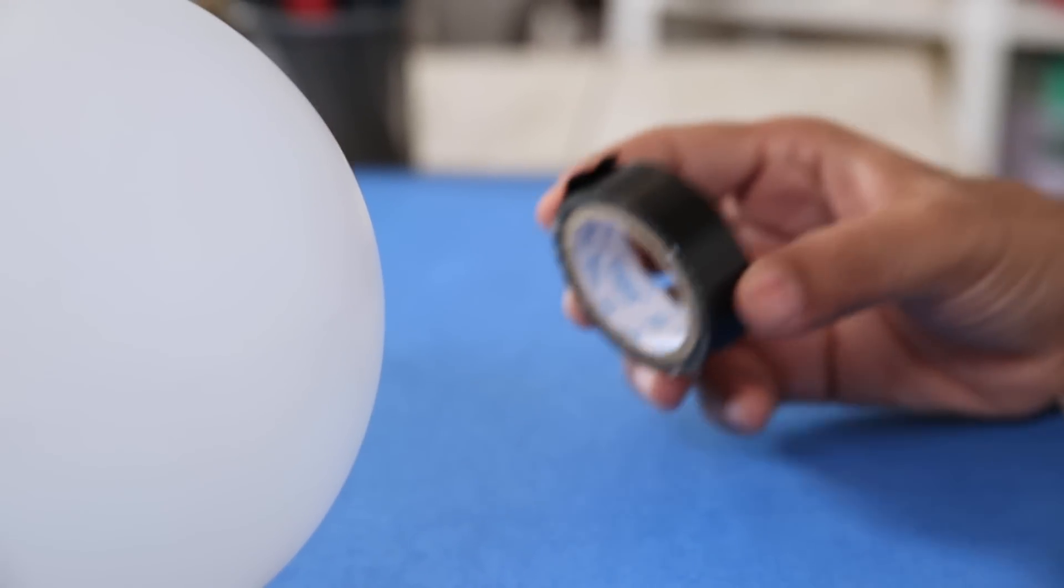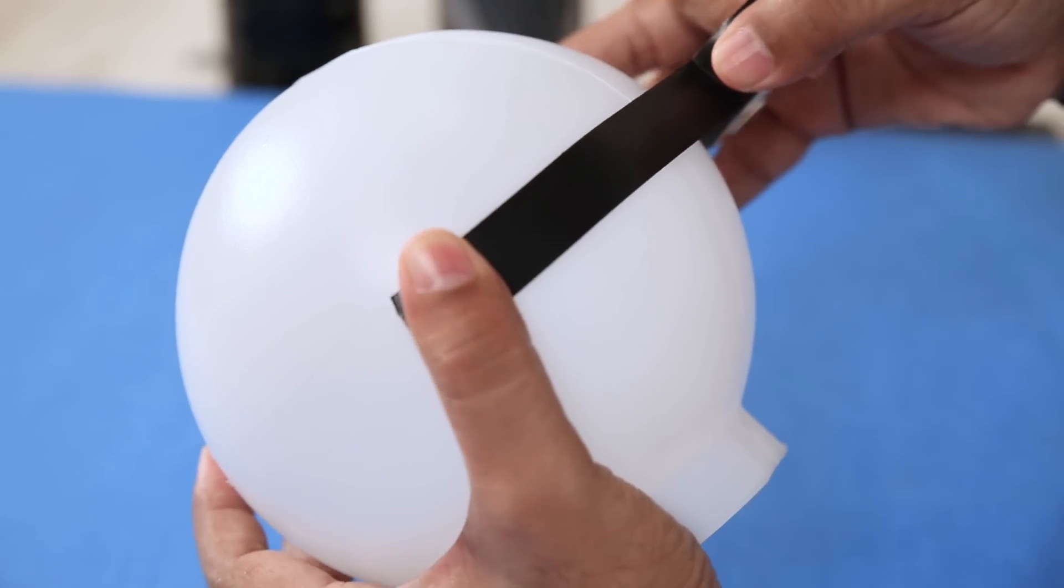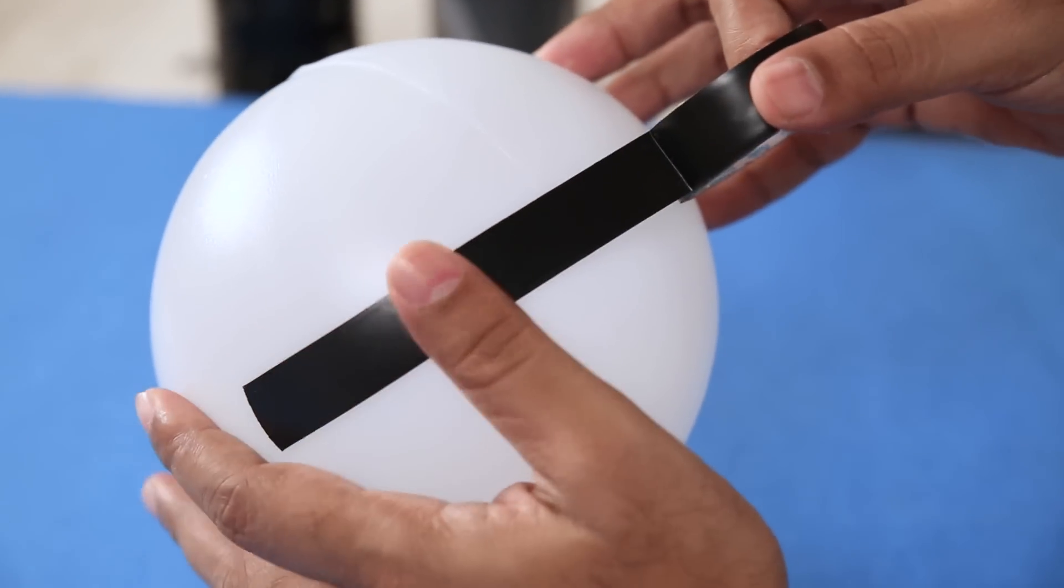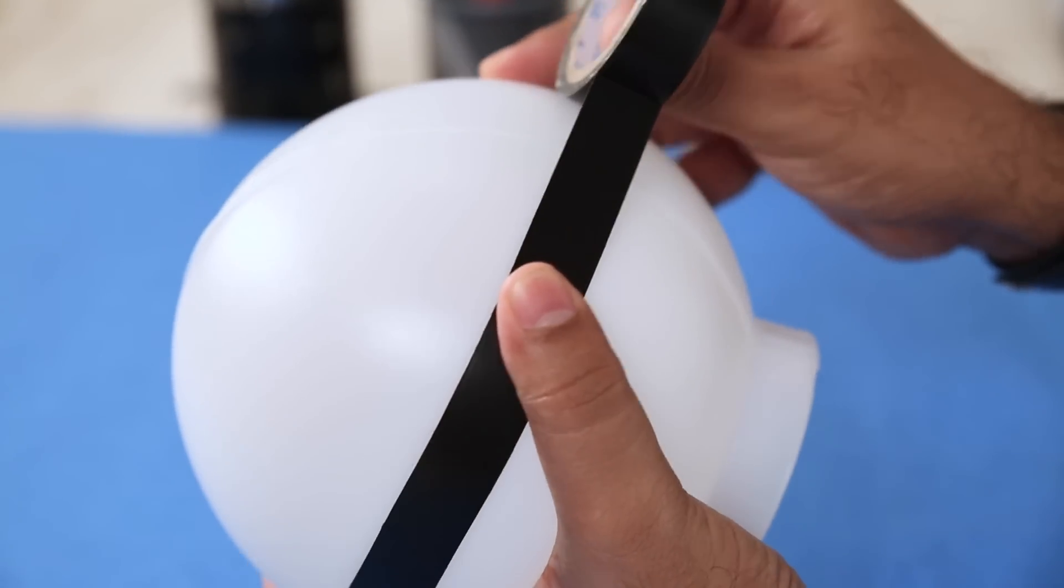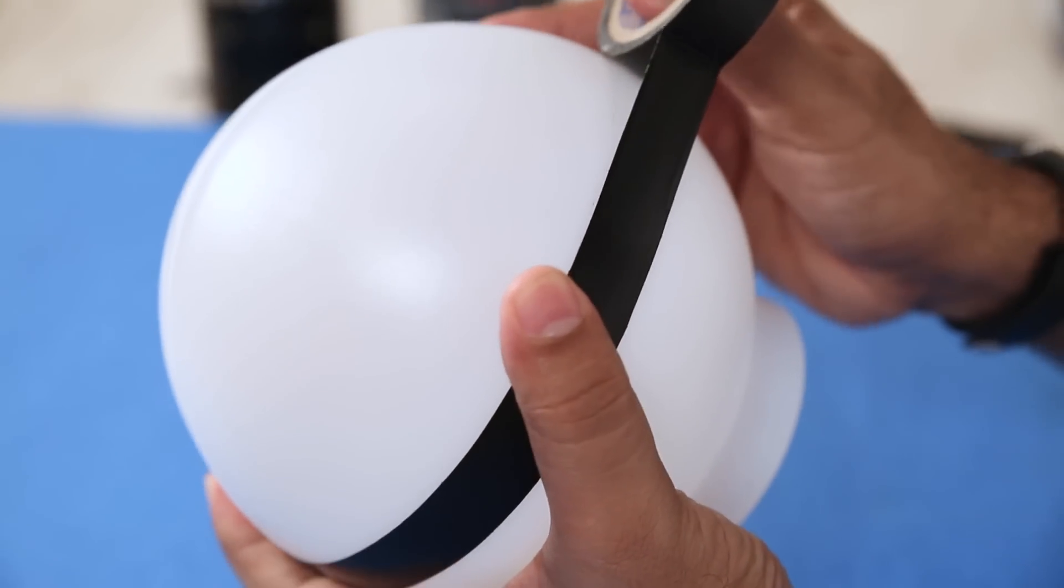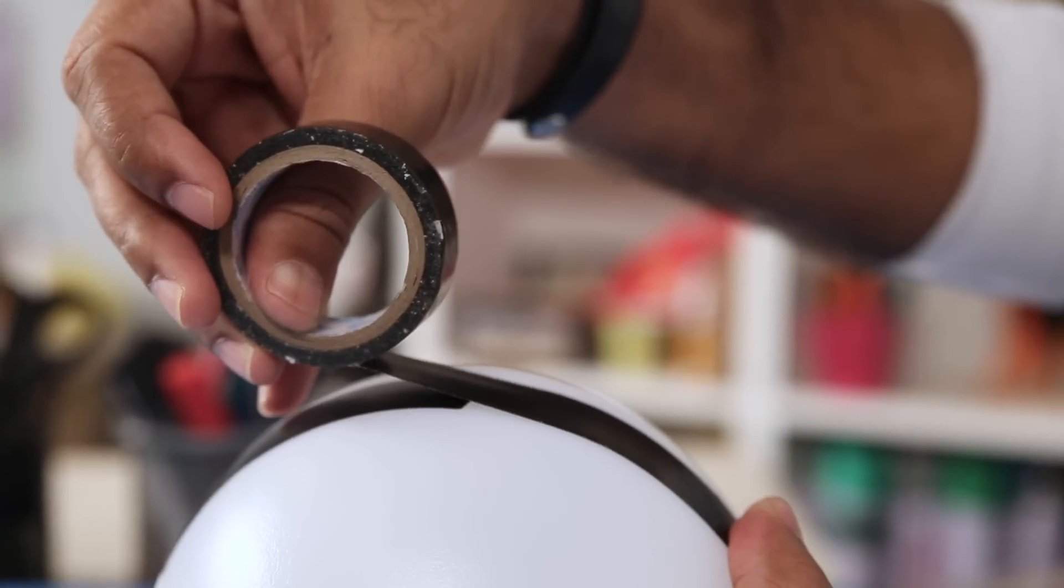Now I'm taking this black electrical tape and I am going to tape it around the ball. When you're putting tape, make sure you stretch it, pull it so that there are no wrinkles and it sticks evenly.